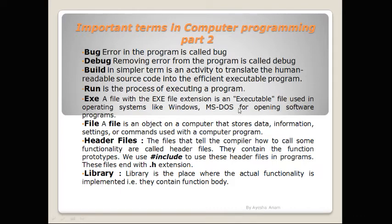The third term is Build. Build is an activity that converts the source code into an executable program. The build process goes through many sub-processes, like fetching the code, compiling the code, running the program, and linking the libraries and files. So, the build process creates the executable program.